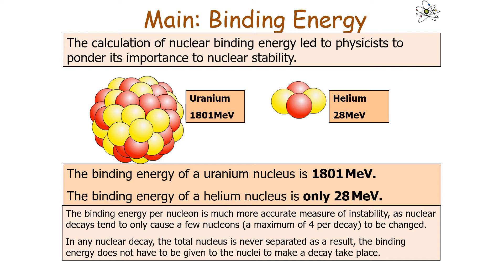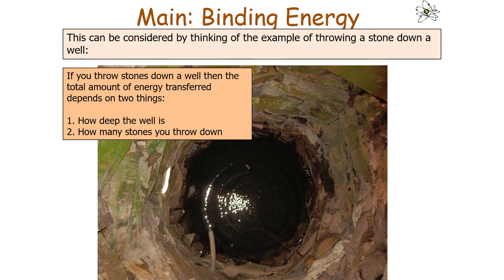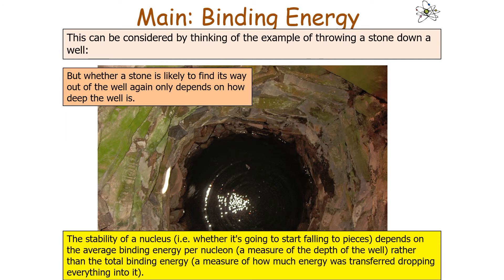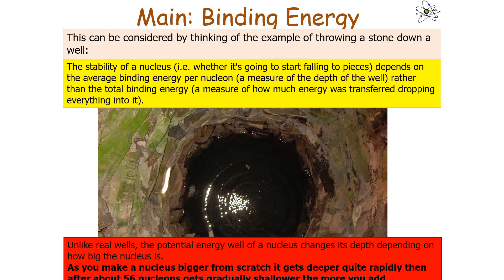In a nuclear decay, the total nucleus is never separated, so the full binding energy does not need to be given to the nucleus to make it decay. Consider the analogy of throwing stones down a well: the total energy transferred depends on how deep the well is and how many stones you throw. But whether an individual stone is likely to find its way out again only depends on how deep the well is — not on how many other stones have been thrown down. Similarly, the stability of a nucleus depends on the average binding energy per nucleon — the depth of the well — rather than the total binding energy.